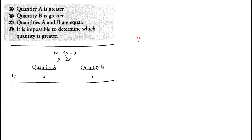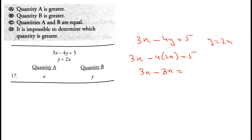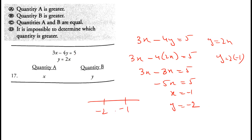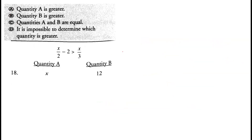Question 17: 3x minus 4y equals 5 and y equals 2x. Substituting y with 2x: 3x minus 8x equals 5, so minus 5x equals 5, giving x equals negative 1 and y equals negative 2. Since negative 1 is greater than negative 2, x is greater than y. Option A is correct.